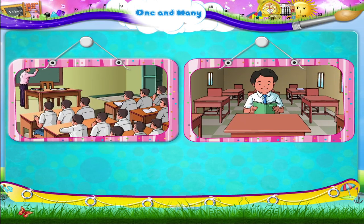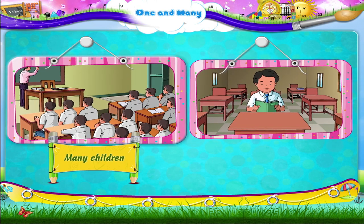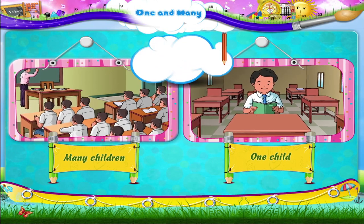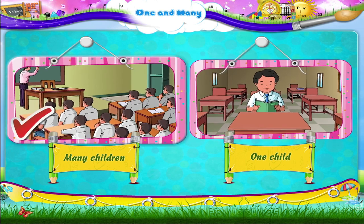This dish has just one apple. Here are two classes. One class has many children and the other class has one child. Which class has many children? This class has many children.